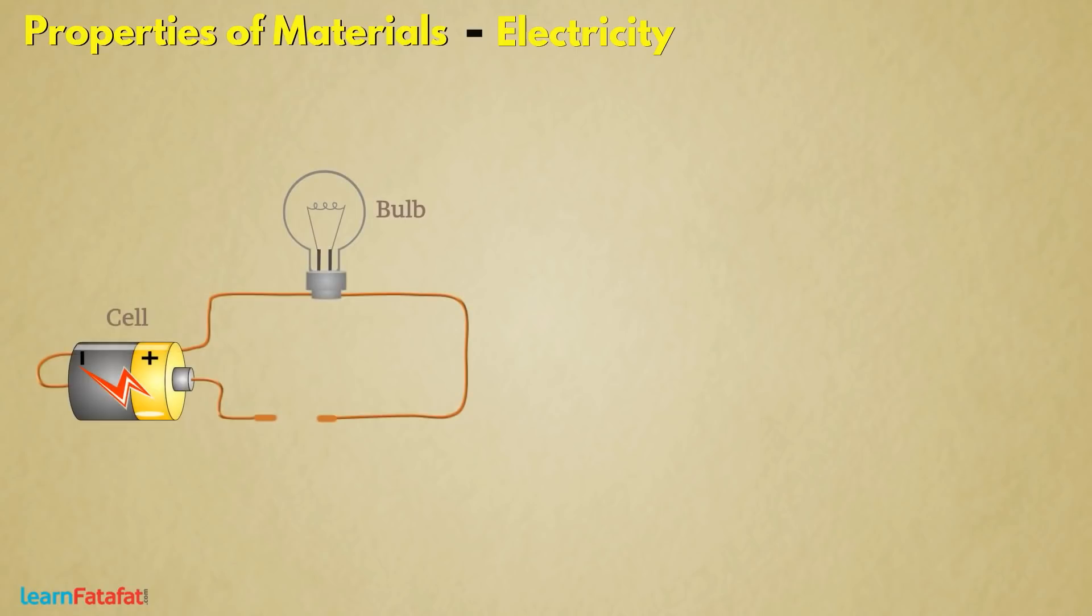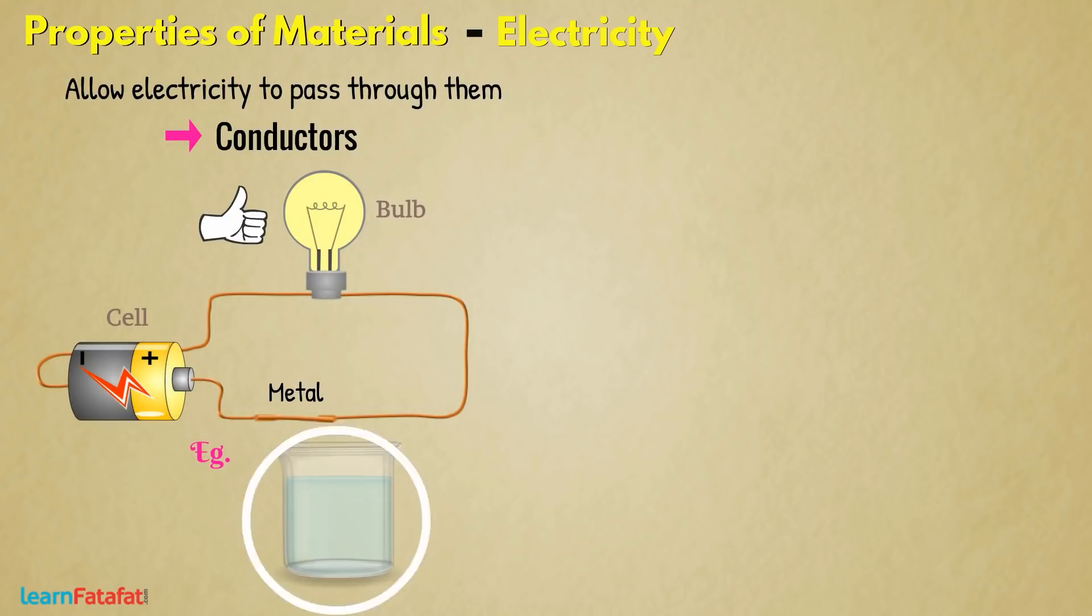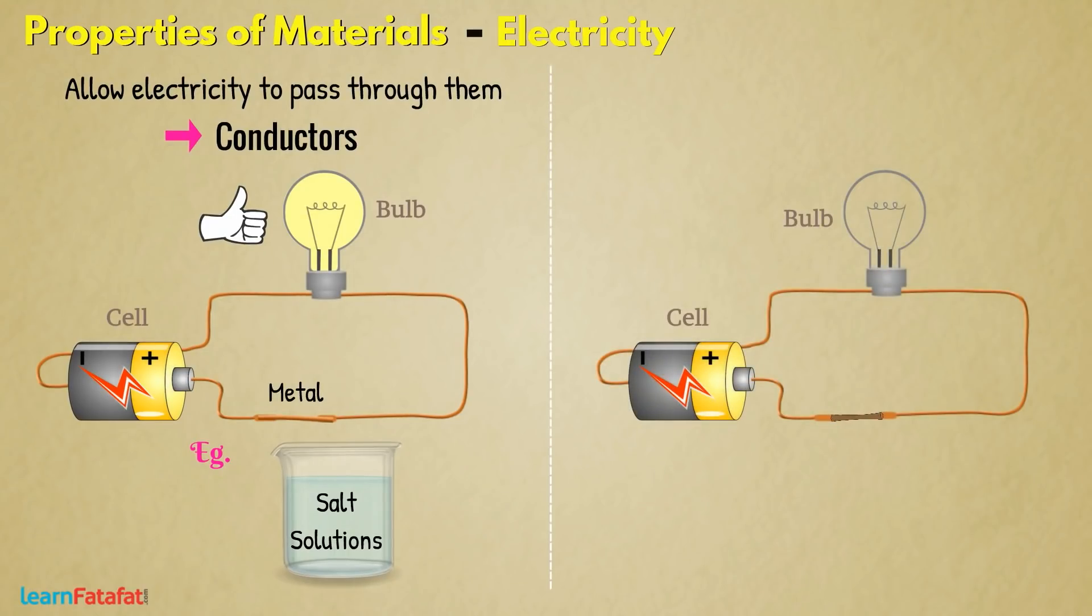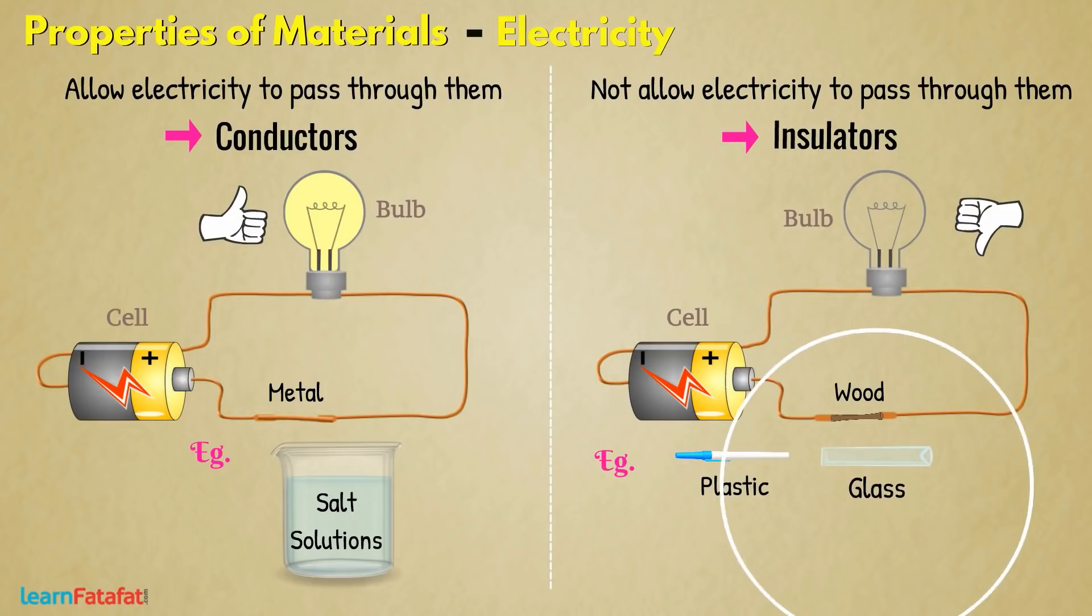Electricity. Some materials allow electricity to pass through them. These are called conductors. For example, all metals, salt solution, etc. Other materials which do not allow electricity to pass through them are insulators. For example, wood, plastic, glass, cotton, oil, distilled water, etc.